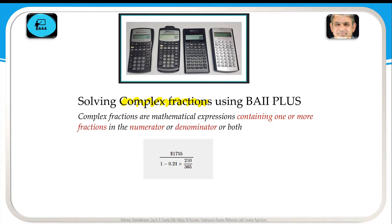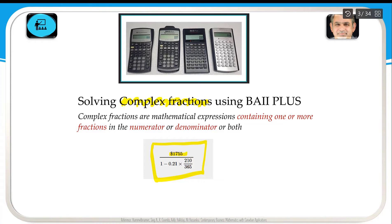A complex fraction is a mathematical expression that contains one or more fractions in the numerator or denominator, or both. In this given question, there is one fraction in the denominator and another fraction in the denominator, so this is a complex fraction because it has two fractions in the denominator.